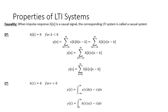Another property is causality. For a system to be causal, the present value of the output cannot depend on the future value of the input. In terms of impulse response, H(N) represents a causal system when H(N) = 0 for N less than zero. We can write the expression for the discrete time convolution sum: Y(N) equals summation K from minus infinity to infinity of X(K) · H(N−K).